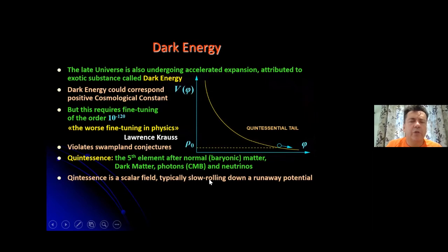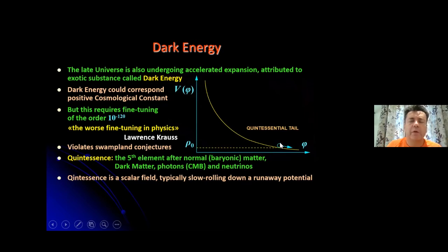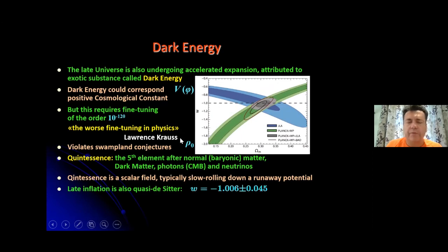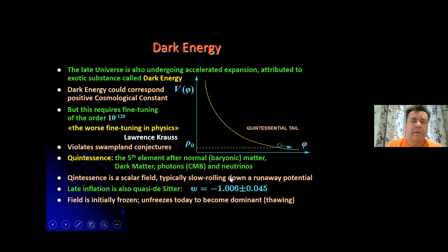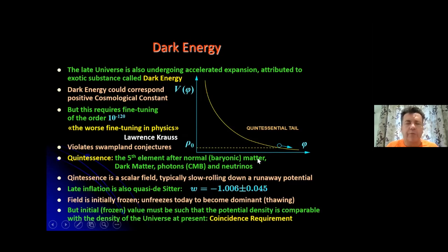One prominent alternative is quintessence — called the fifth element after baryonic matter, dark matter, photons (mainly the CMB), and neutrinos. Quintessence is a scalar field, like the inflaton field, typically slowly rolling down a runaway potential called the quintessential tail. Dark energy today is then really a late inflationary period, which is also quasi-de Sitter since the barotropic parameter of dark energy is close to minus one. Typically, the field is initially frozen and unfreezes today when it becomes dominant — this type is called thawing quintessence. However, the initial frozen value must be such that the corresponding potential energy density is comparable to the density of the universe, which is the very tough coincidence requirement.